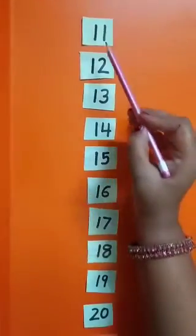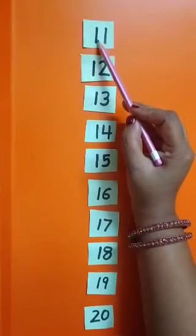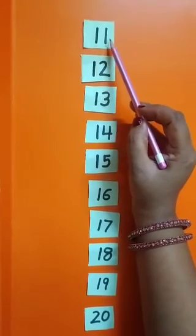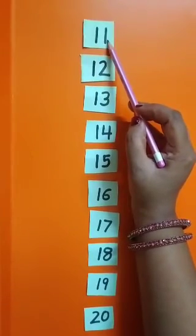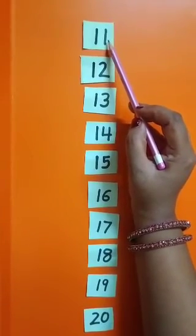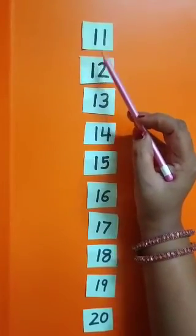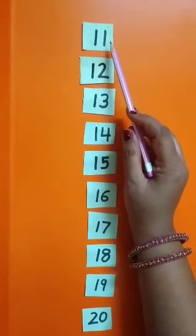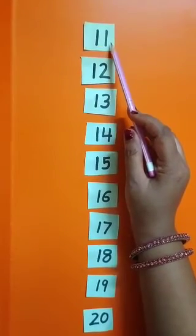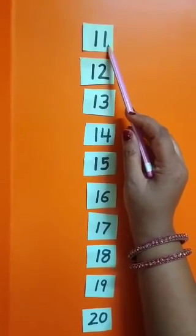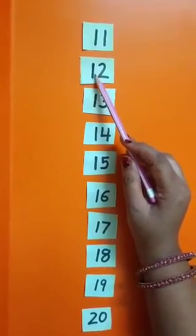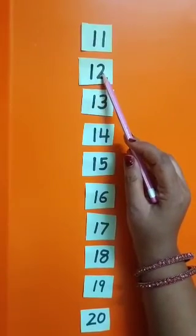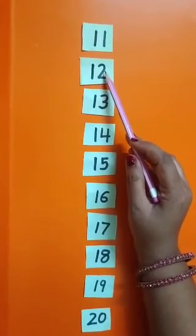Let's start. One ten and one ones. Eleven. One ten and two ones. Twelve.